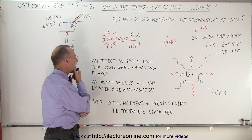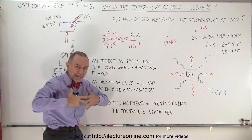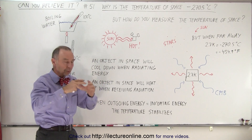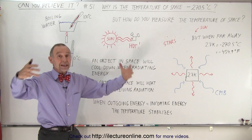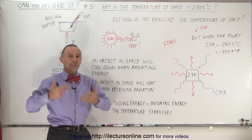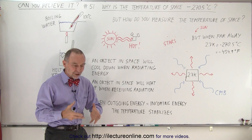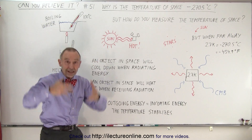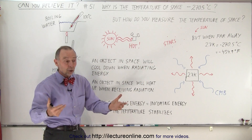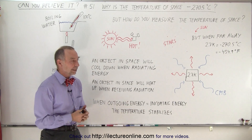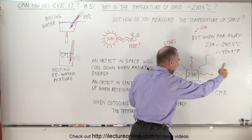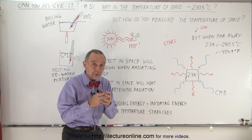It turns out that if you place an object in space it will radiate out energy, and by radiating out energy it will cool down — cooler and cooler. At the same time, if it's receiving energy from somewhere, like if you're close to the sun, it'll get warmer and warmer. An object in space will increase or decrease in temperature depending on whether it's giving off more radiation than it's receiving, or receiving more than it's giving off.